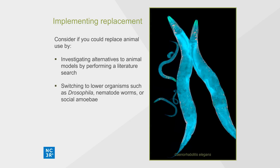If a living whole organism is vital to your research, then you should consider using lower organisms such as Drosophila, nematode worms or the social amoebae Dictyostelium. Such organisms possess biological pathways and systems analogous to vertebrates and can have scientific advantages over other commonly used animal models. They have been used widely in biological research to study diseases from cancer to neurodegeneration, and to assess the safety of pharmaceuticals and other chemicals.